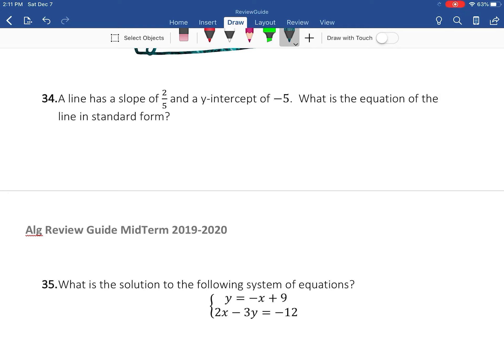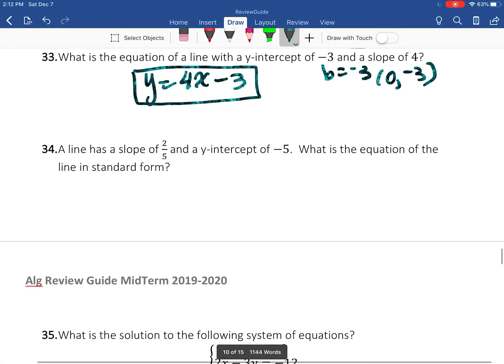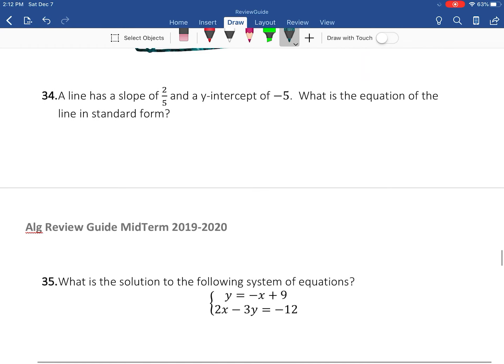Number 34. A line has a slope of 2/3 and a y-intercept of -5. So again, just like above, but now we're going to add another step to it because now we need it in standard form.